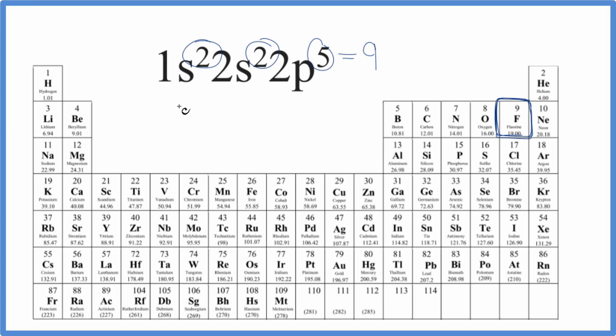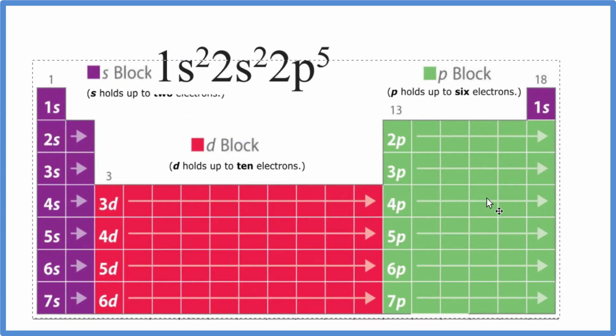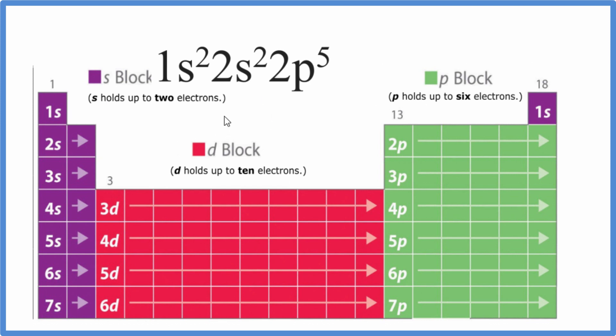There's another way we can do this, though. We could look at the periodic table broken up into what we call orbital blocks. So s can hold up to two electrons. We'd have s¹ for all of these, s² for all of these.